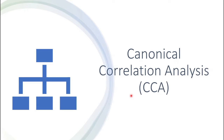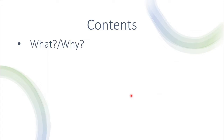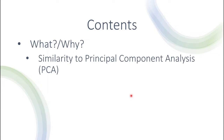Hello everyone and thank you for watching this video. Today we're going to talk about canonical correlation analysis. This is a dimensionality reduction technique for multi-view data. We'll talk about exactly what it is and why we need it, and I will try to emphasize the similarity between CCA and principal component analysis, PCA.